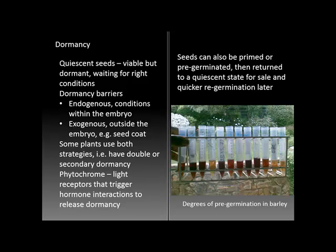One fascinating material recently discovered in plants is phytochrome — a substance that detects light within the seed and triggers hormone interactions that release dormancy. Germination can also be promoted in crop plants by priming the seeds or, in some cases, even pre-germinating them. Once that's been done, those seeds are returned to a quiescent state for sale, but later when they're planted they re-germinate more quickly and more consistently in a seed batch.